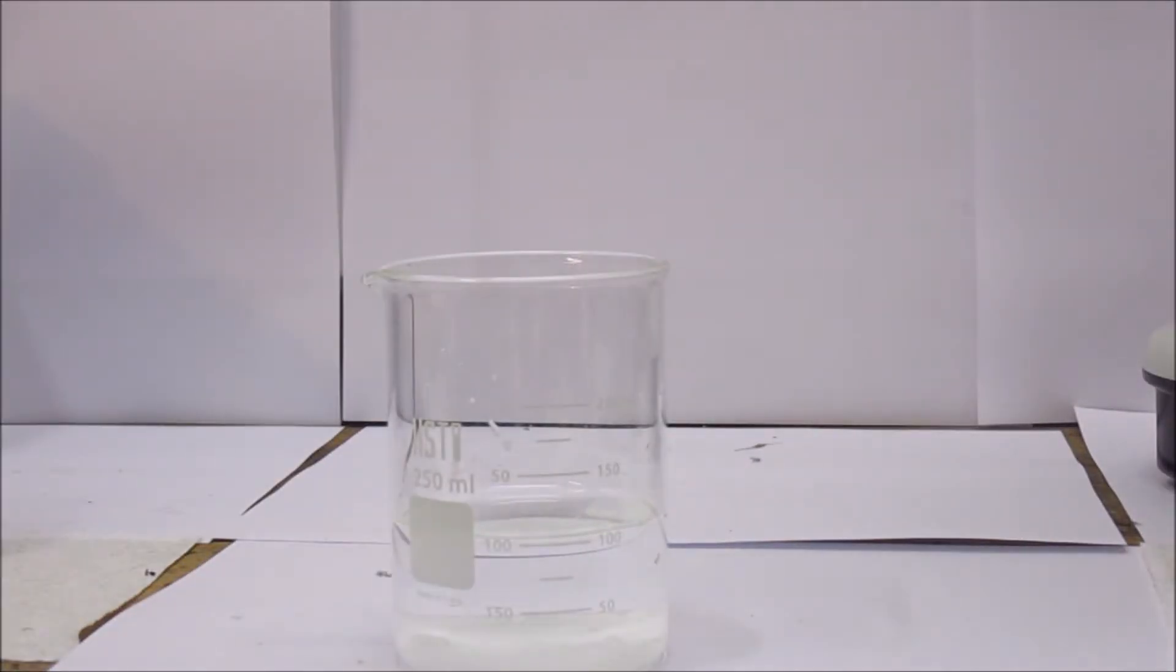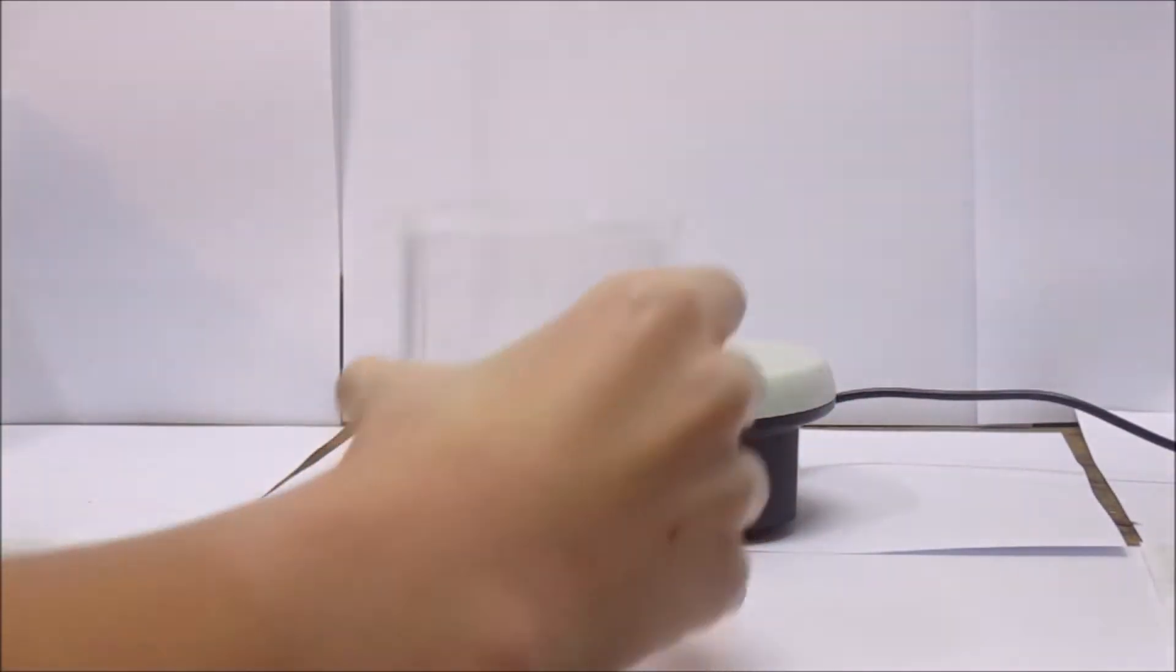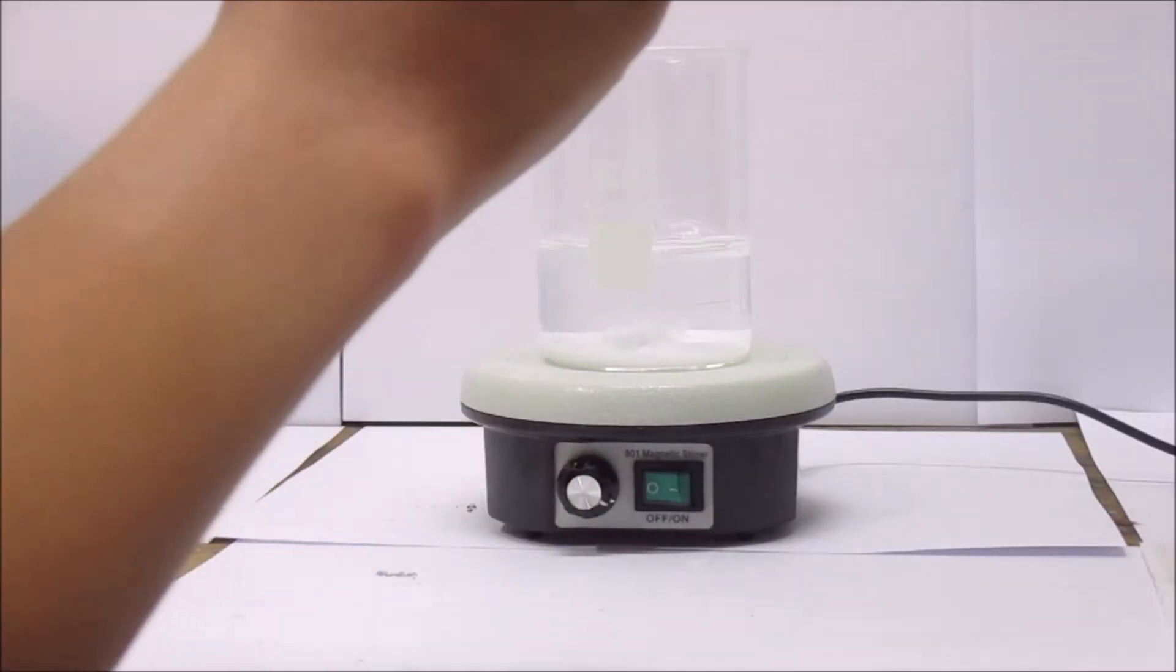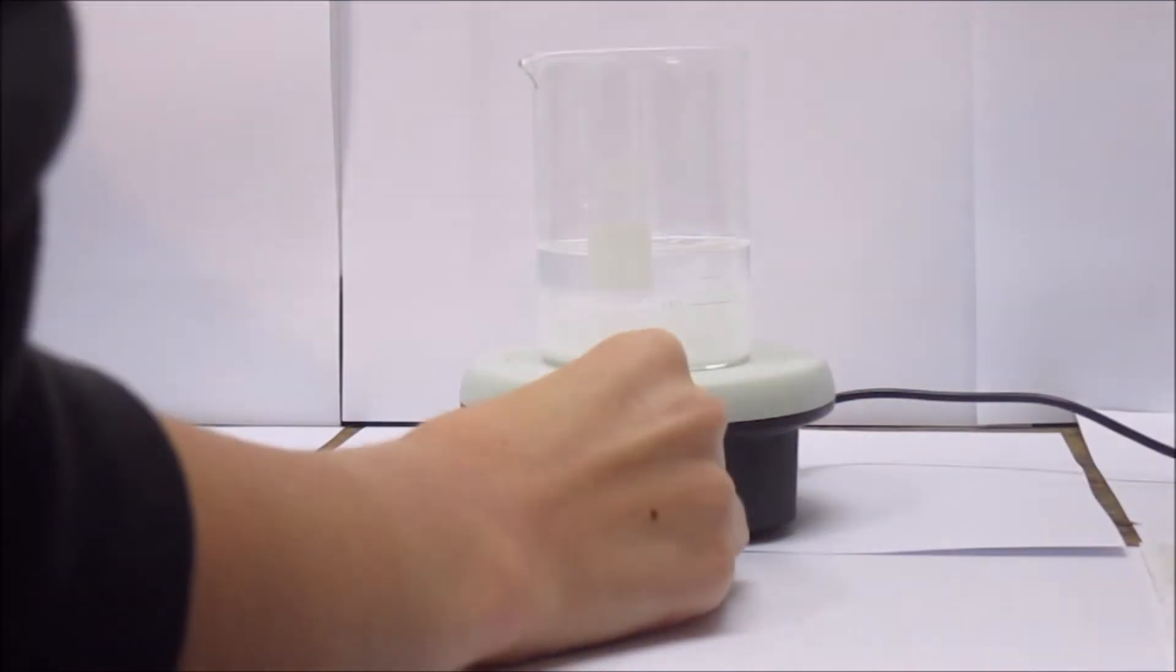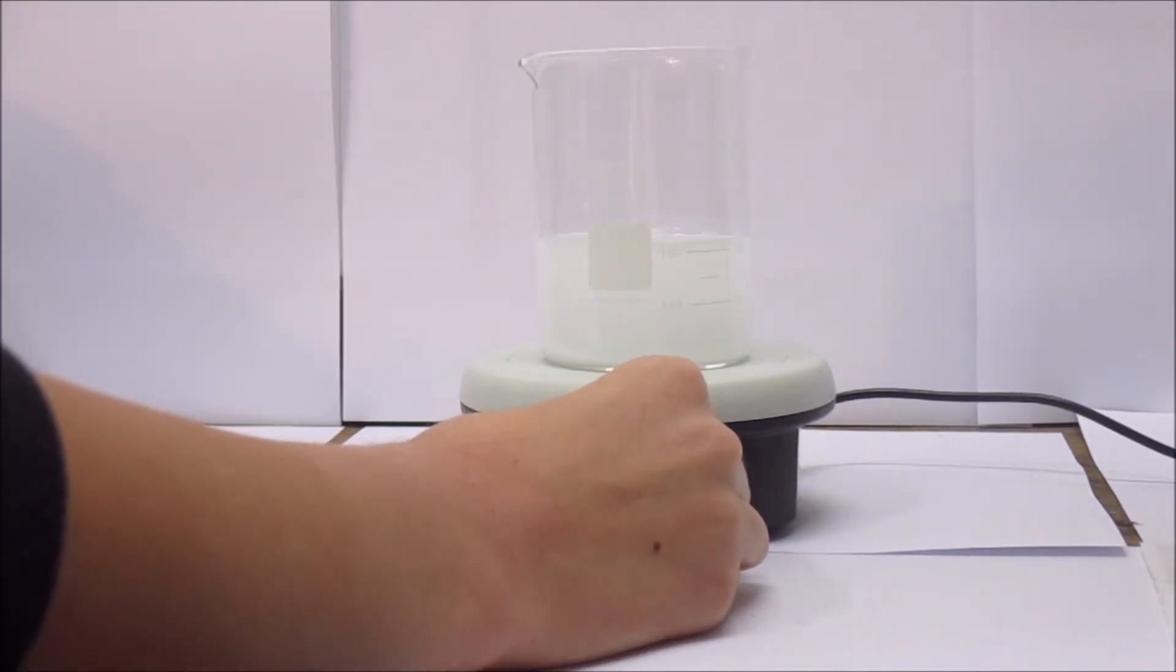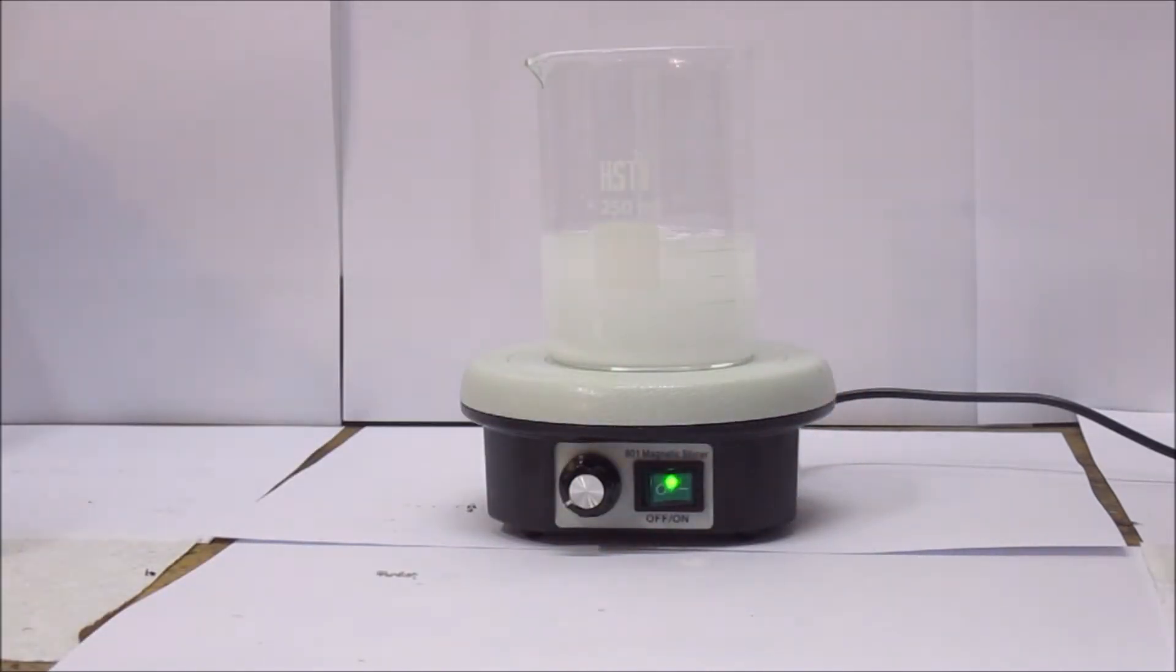And then I placed it on the magnetic stir plate. I then added a stir bar, turned it on, and let it dissolve. Once it was done, I took it off the stir plate.